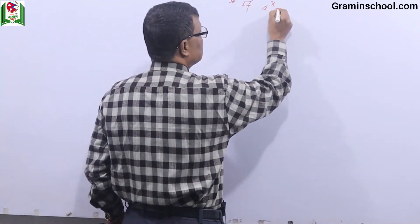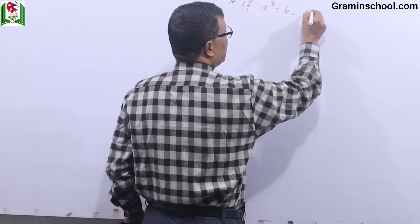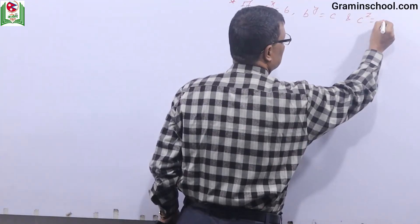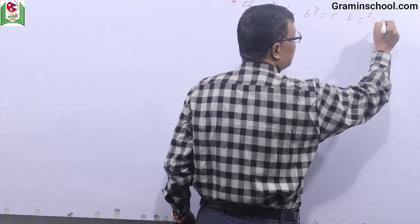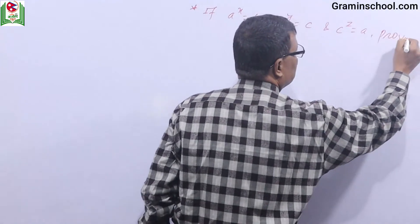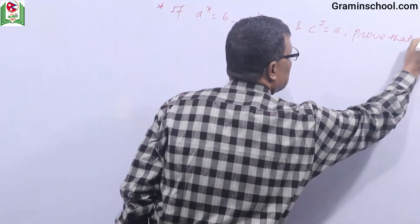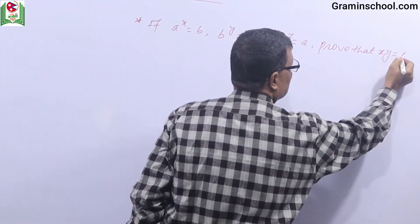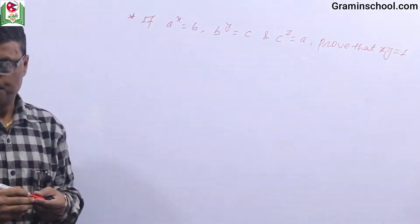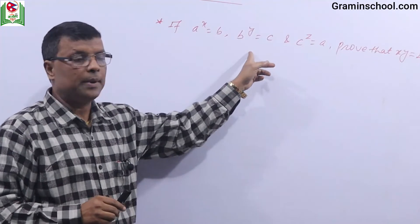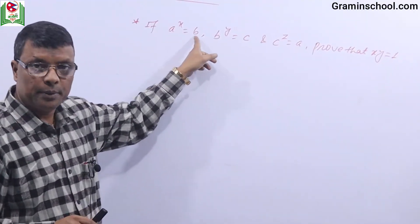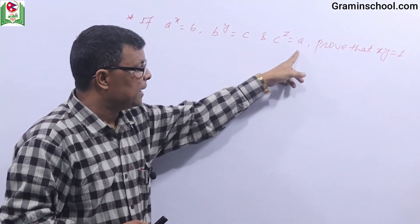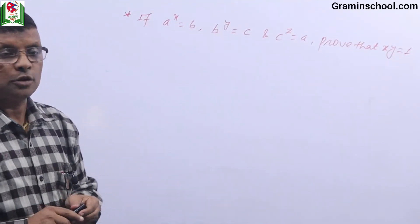If A power X is equals to B, B power Y is equals to C, and C power Z is equals to A, prove that X Y Z is equals to 1.